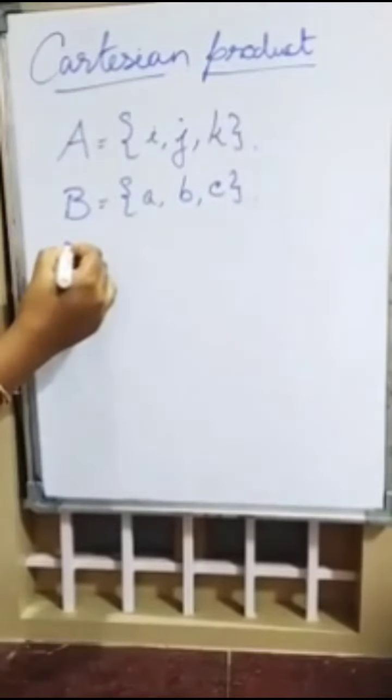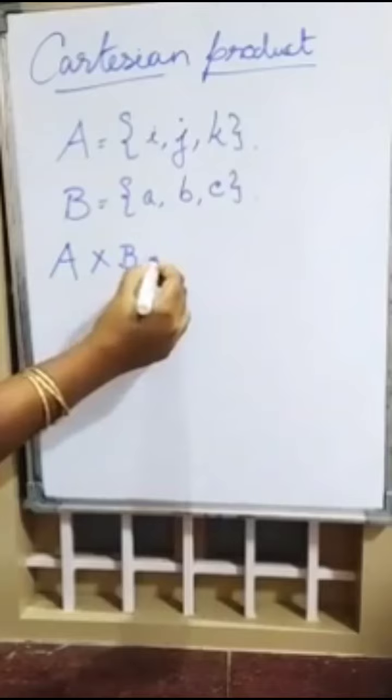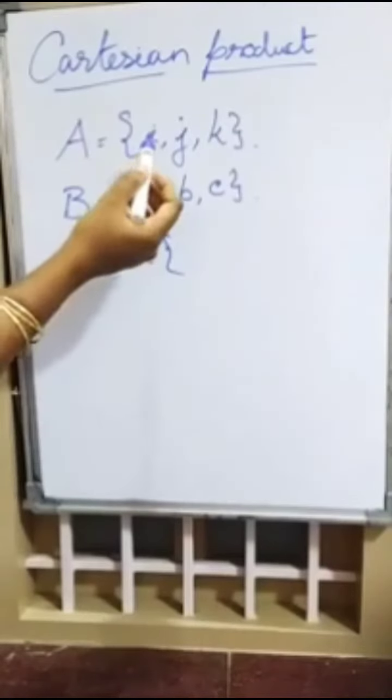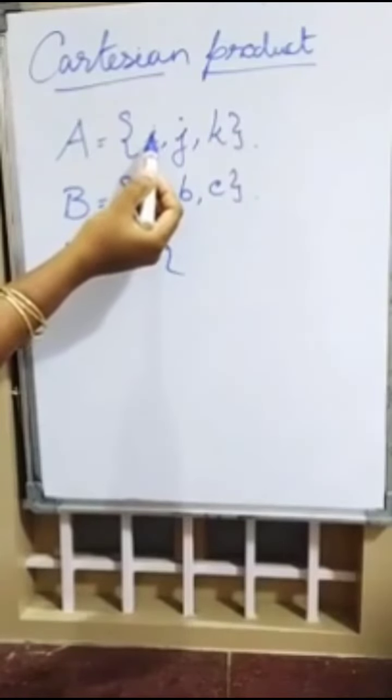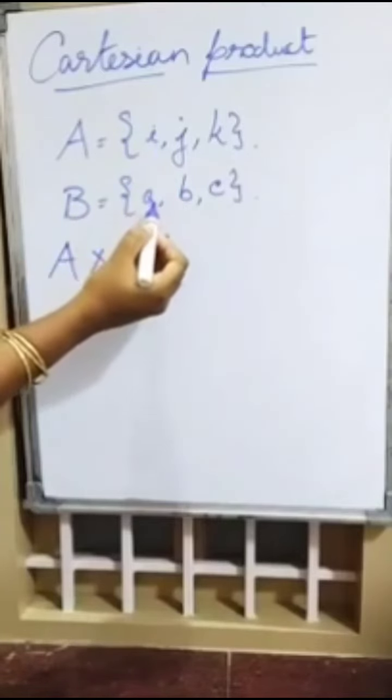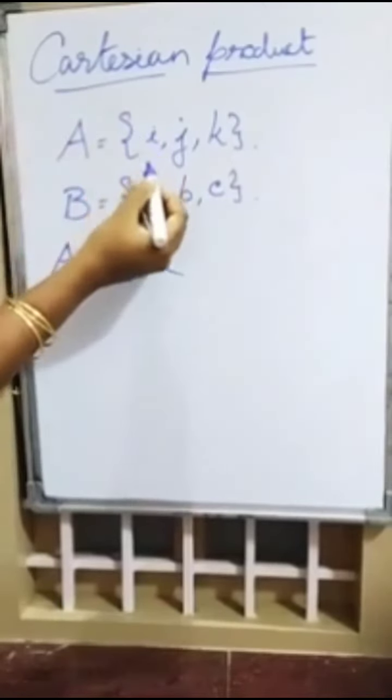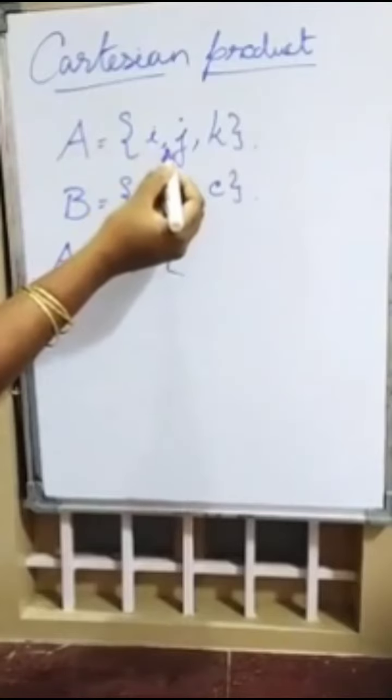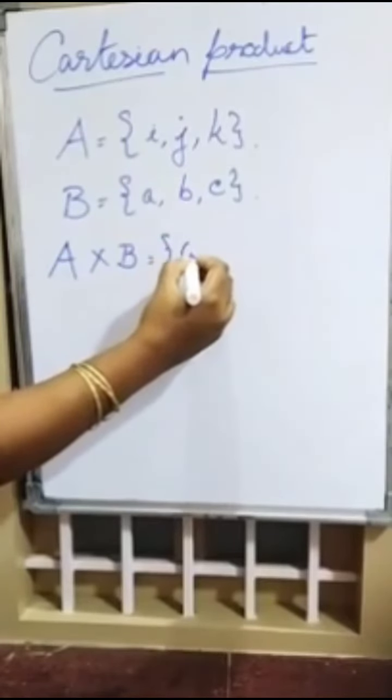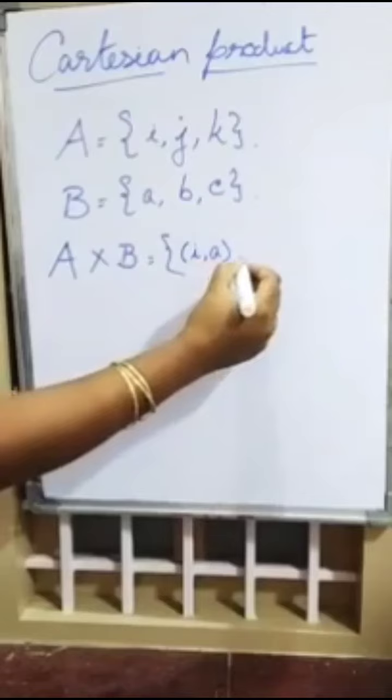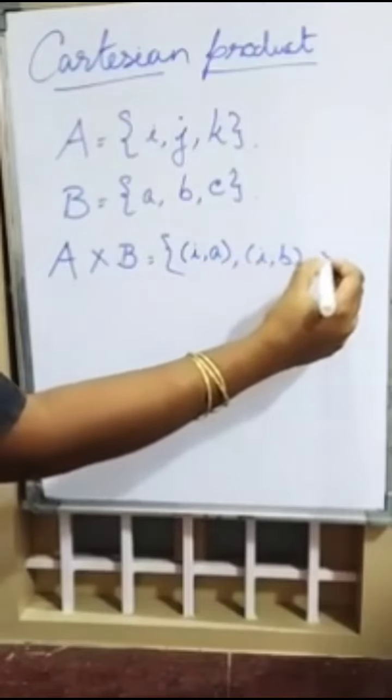Cartesian product means you have to find A cross B. You have to take the first element from the A set, that is I, and mix it with all the elements from B. That is, you have to write the ordered pairs: I comma a, I comma b, I comma c.